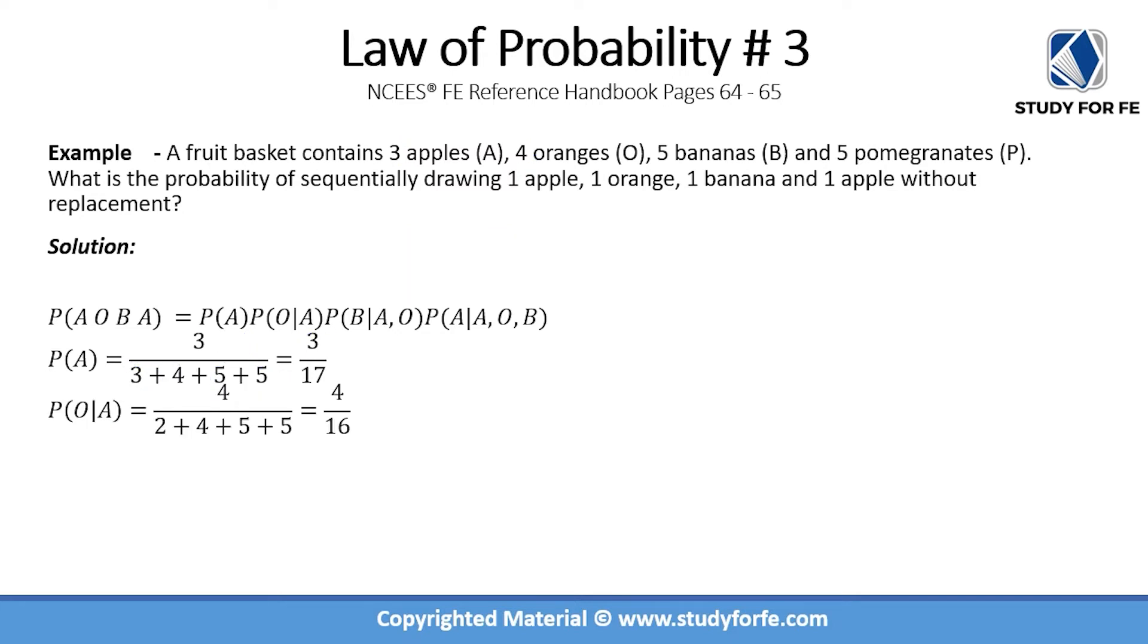Now, probability of an orange given that an apple has been removed is four oranges divided by 16. We started with three apples but now we only have two apples. In terms of oranges, none have been removed, so this remains the same. This becomes 4 by 16.